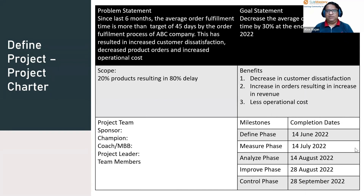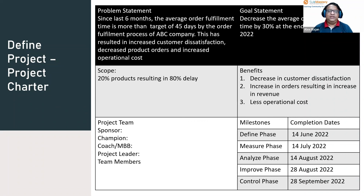This is the minimum requirement for a project charter and how to write it systematically. As a Green Belt, we will go into more detail about how to write a problem statement, goal statement, and define the scope, as well as the roles and responsibilities of project team members. The project charter includes: problem statement, goal statement, scope, benefit, milestones, and the names of the project team.